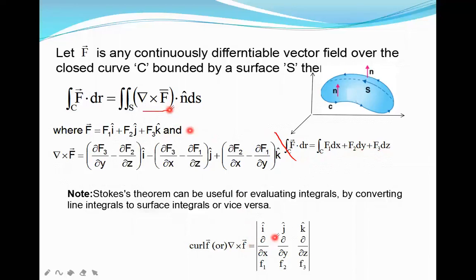Del cross f equals a 3x3 determinant with i, j, k in the first row; partial derivatives dou/dou x, dou/dou y, dou/dou z in the second row; and f1, f2, f3 in the third row. If we expand this determinant, we will get the curl of f.